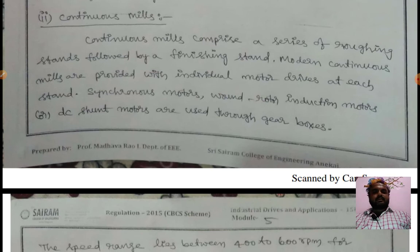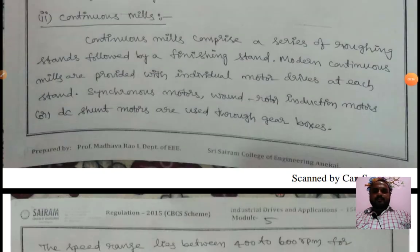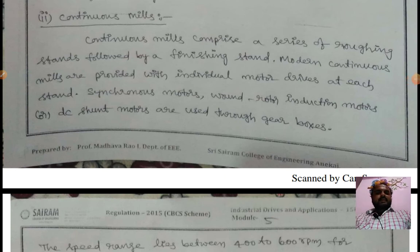Continuous mills comprise a series of roughing stands followed by finishing stands. Modern continuous mills are provided with individual motor drives at each stand. Synchronous motors, wound rotor motors, or DC motors are used.